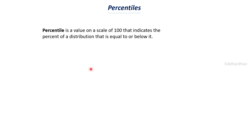Let's first understand percentile with a definition. A percentile is a value on a scale of 100 that indicates the percent of a distribution that is equal to or below it. Percentile can have values from 0 to 100 and it tells how many values are below a particular data point. If you have appeared in competitive exams, you would have heard about percentiles — results are often given based on percentiles.